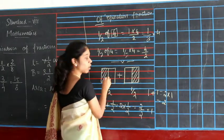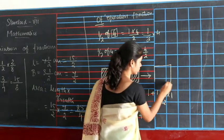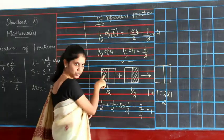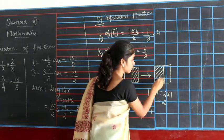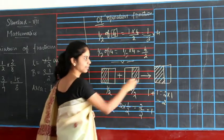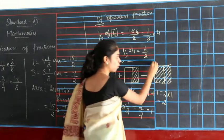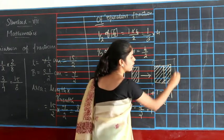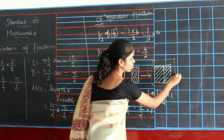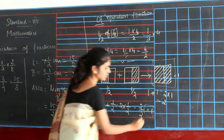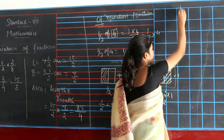Likewise, if you combine these 2, you can write 1 shaded part here and 1 shaded part here. You can shade 1 part for this one and the other part for this one — 1 fully shaded box, which is equal to 1. This is the multiplication of fractions.